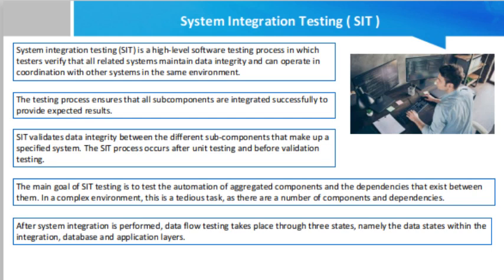System integration testing tests the interactions between different systems and may be done after system testing. It verifies the proper execution of software components and proper interfacing between components within the solution. The objective of SIT testing is to validate that all software module dependencies are functionally correct and that data integrity is maintained between separate modules for the entire solution. Testing for dependencies between different components is a primary function of SIT testing, and this area is often most subject to regression testing.